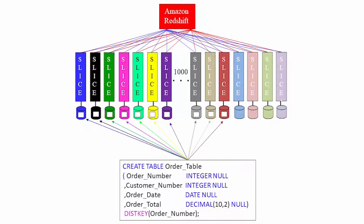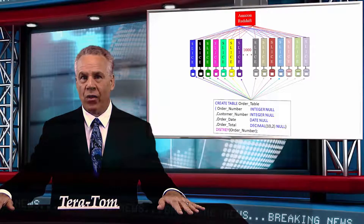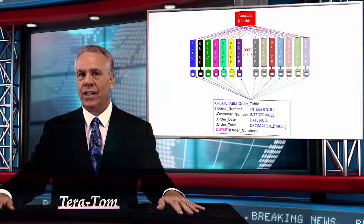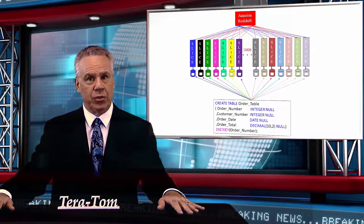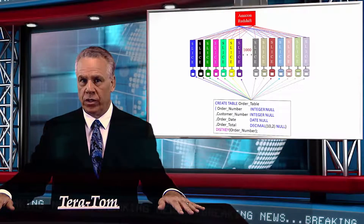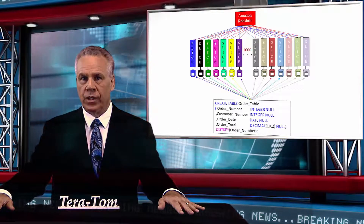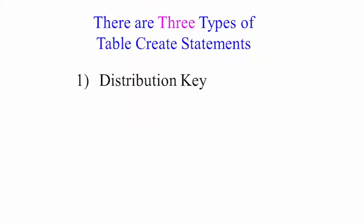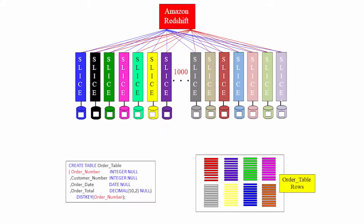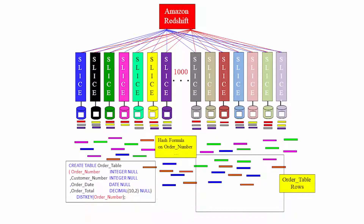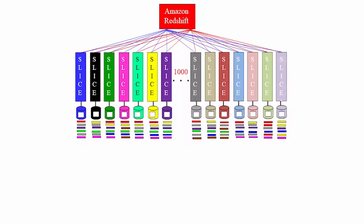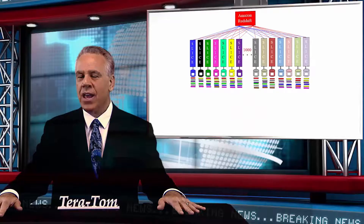When you deliver the rows, that depends on how you created the table, because there are three distribution types with Amazon Redshift. Those distribution types include a distribution key — you pick a column in the table and say, I want you to distribute that row based on the value in the distribution key column. That's pretty standard.